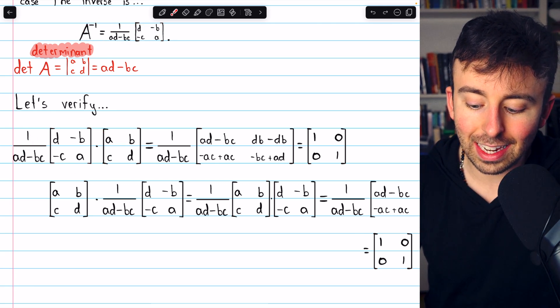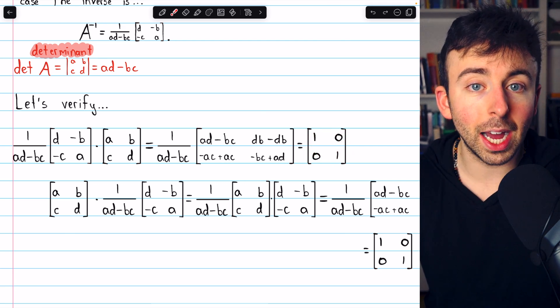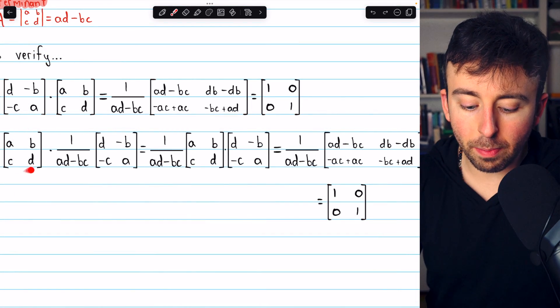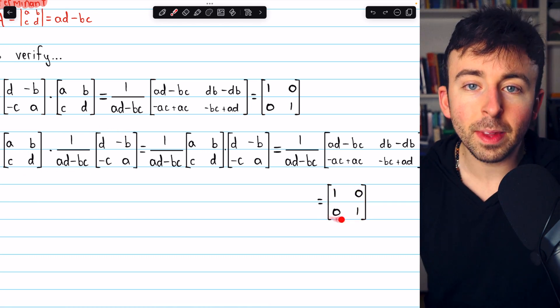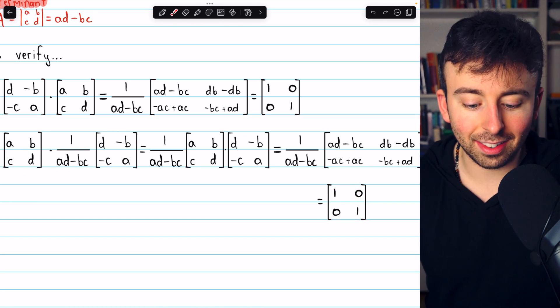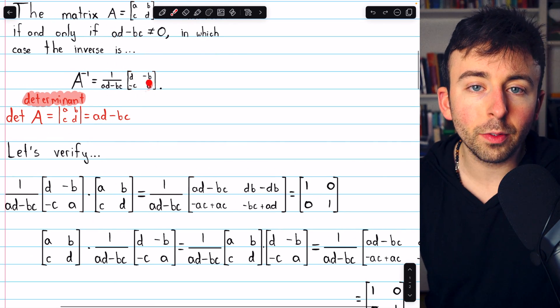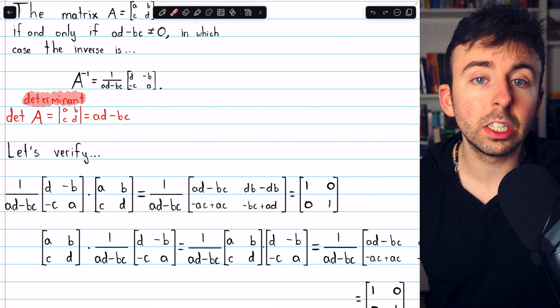And so you can see that multiplying what we think should be the inverse on the left does indeed invert the matrix and leave the identity matrix behind. A very similar computation shows that multiplying the inverse matrix on the right also produces the identity, thus verifying that yes, this is the correct formula for the inverse of an invertible 2 by 2 matrix.